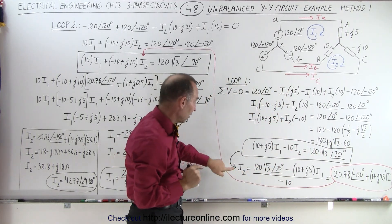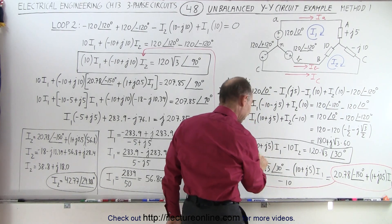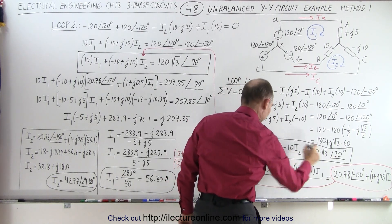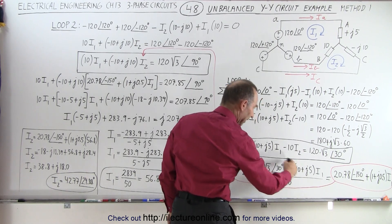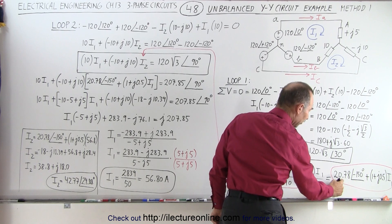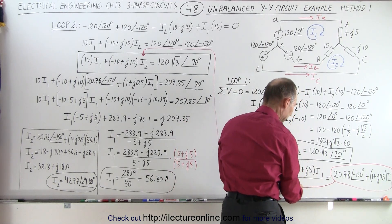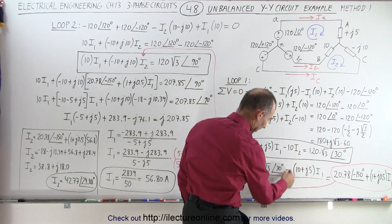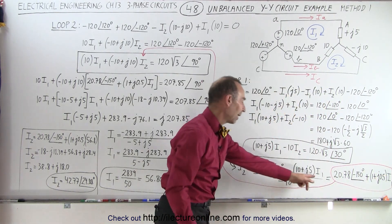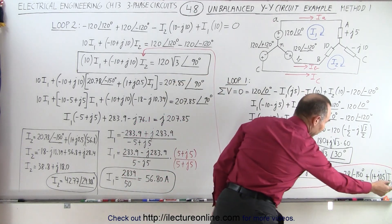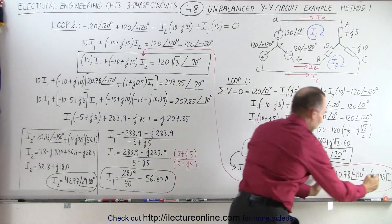Taking the first equation and solving it for I2 — moving the I1 term to the right side so it becomes minus 10 minus J5, and then dividing both sides by the coefficient of I2, which is minus 10. When simplified, I2 equals 20.78 at a phase angle of minus 150, plus — since minus times minus cancels — 10 divided by 10 is 1 and J5 divided by 10 is 0.5J, all multiplied times I1. So now we have I2 expressed in terms of I1, which gets substituted into our second equation.